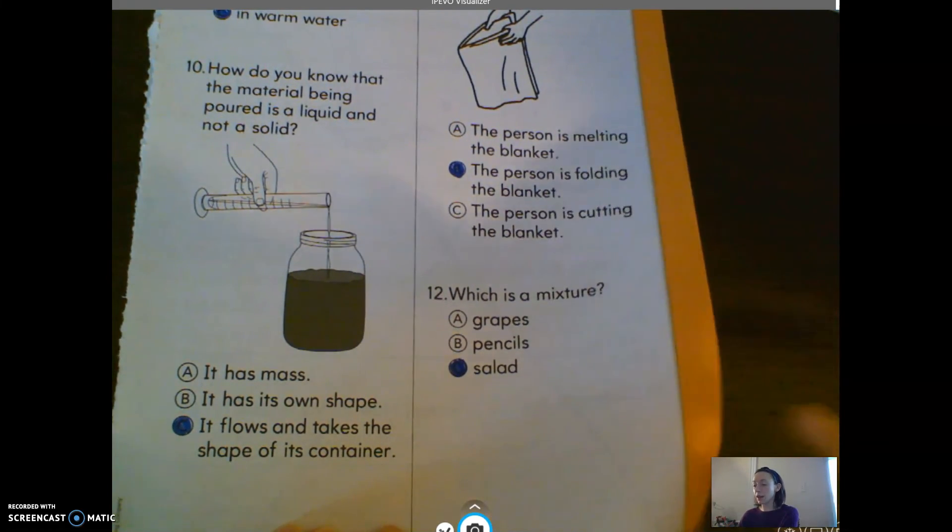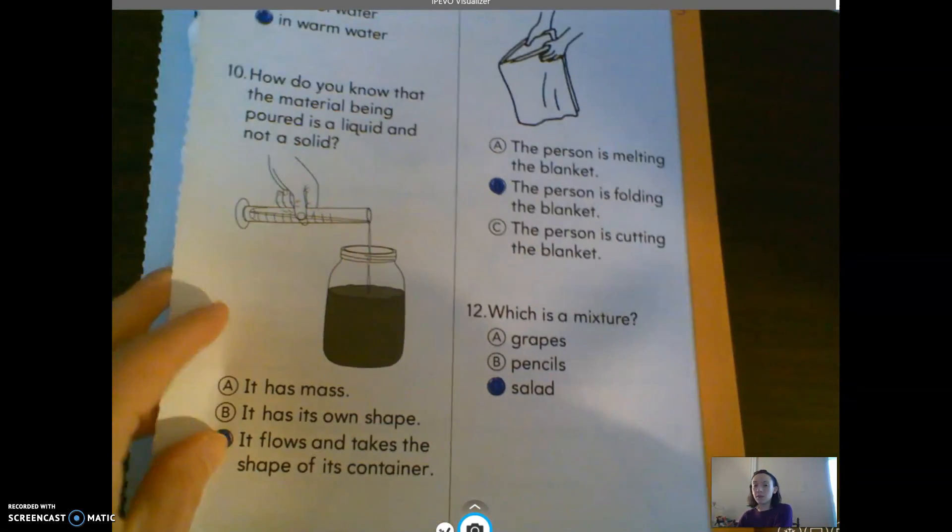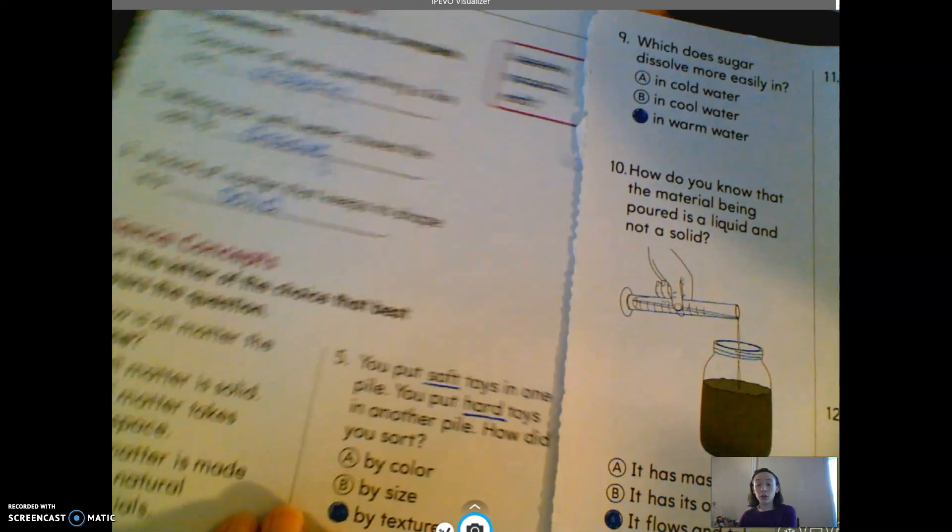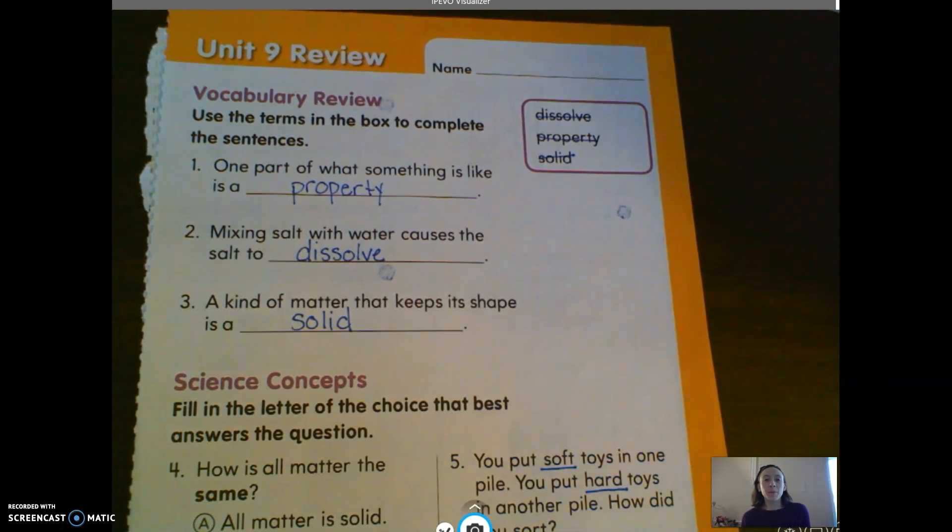That is the last question, because remember, we're going to skip this back side. So we are stopping right here at page 367. When you are done with your science review, if you will take pictures of these three pages and submit them onto Class Dojo. That way I can see how you guys did. Thanks. Bye, guys.